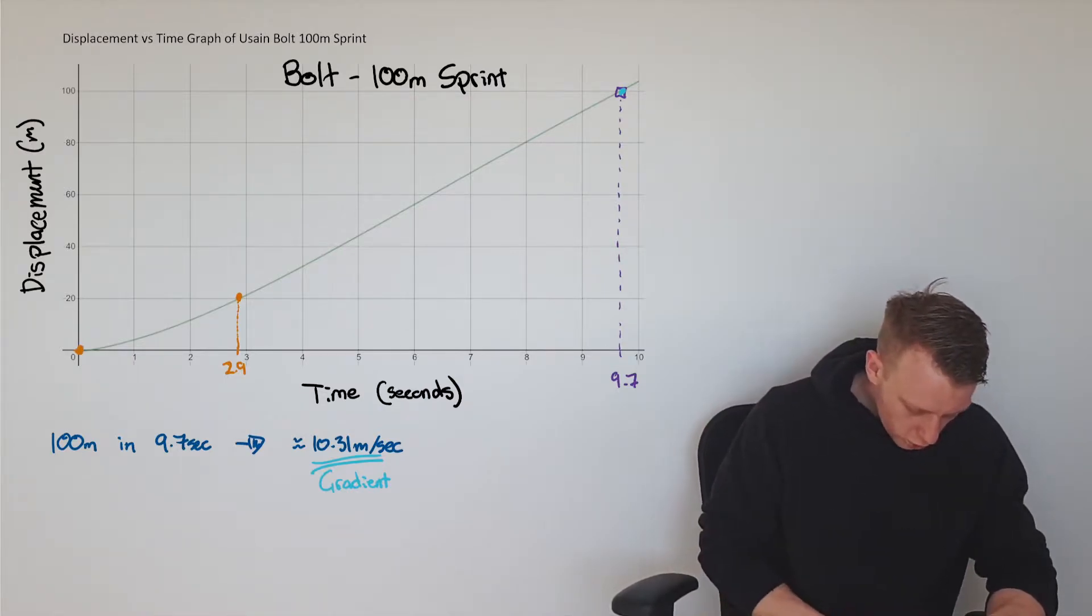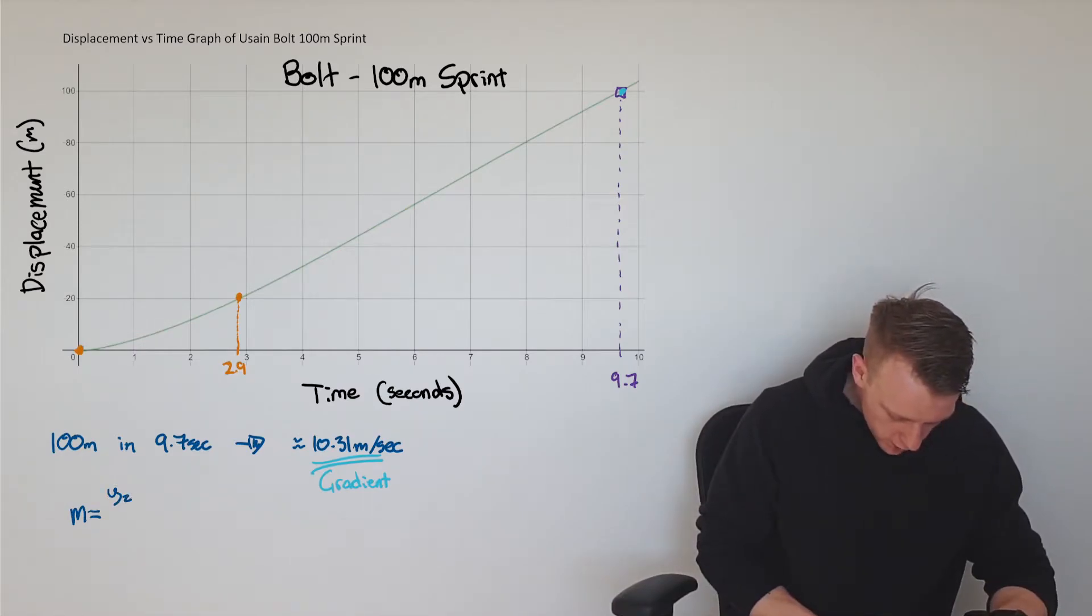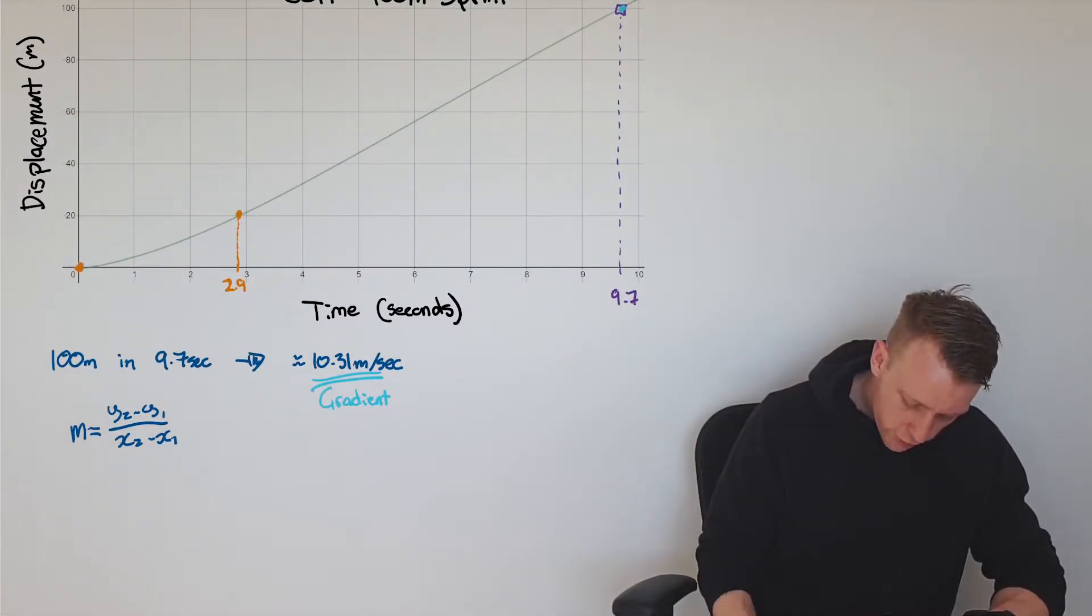Just to recall, to calculate the gradient it's rise over run, so y2 minus y1 over x2 minus x1. So if we were to calculate it for the first 20 meters...